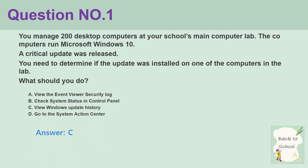Question number 1. You manage 200 desktop computers at your school's main computer lab. The computers run Microsoft Windows 10. A critical update was released. You need to determine if the update was installed on one of the computers in the lab. What should you do? A. View the event viewer security log. B. Check system status in control panel. C. View Windows update history. D. Go to the system action center. Answer: C.